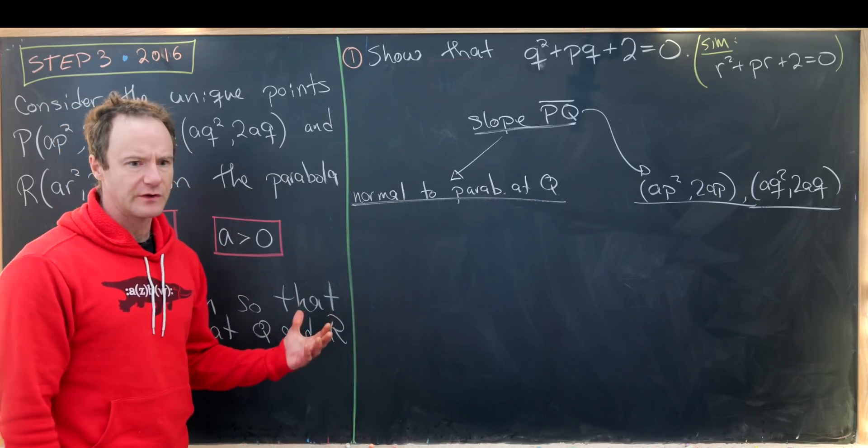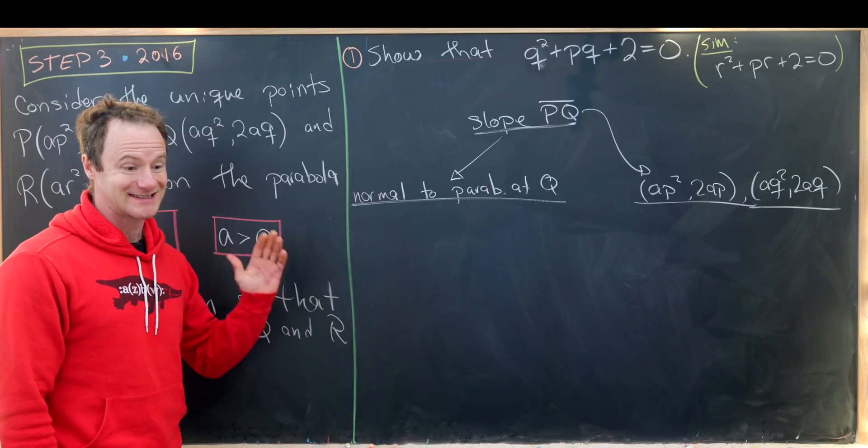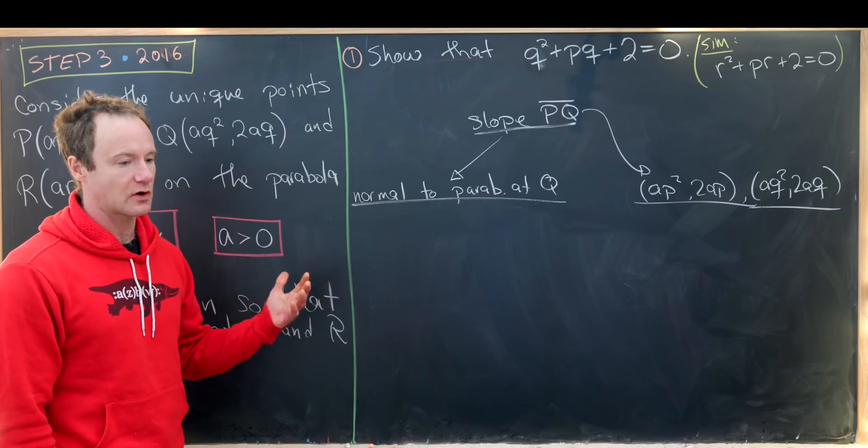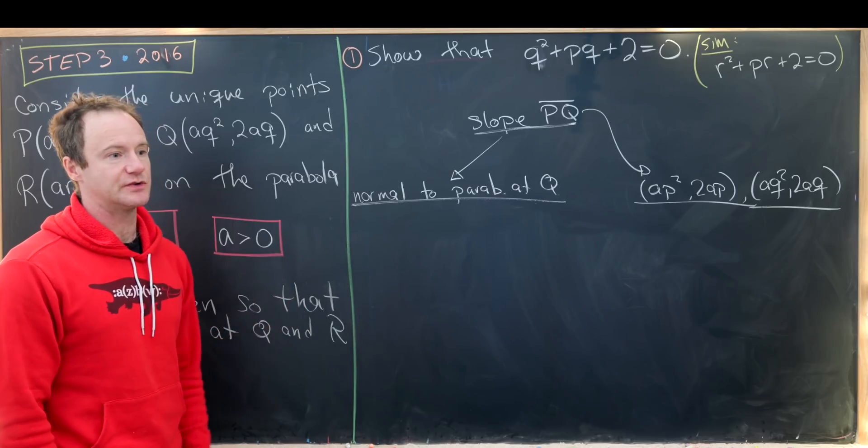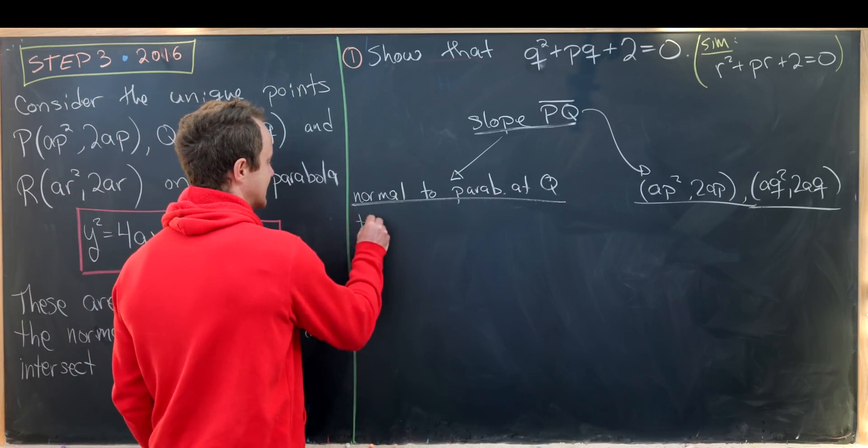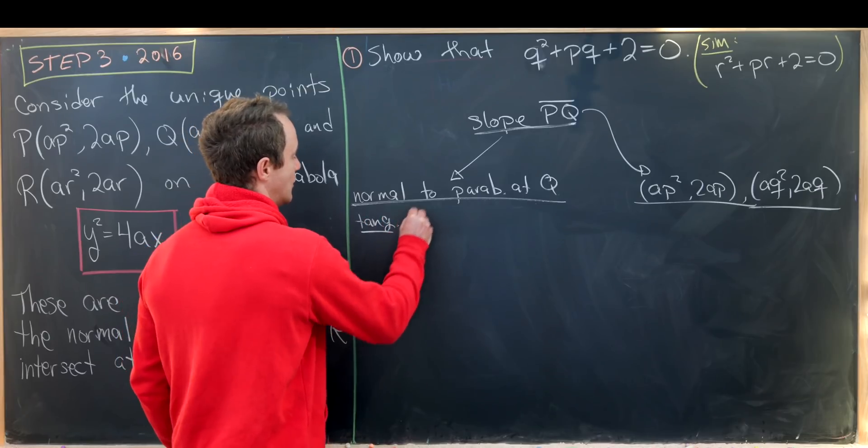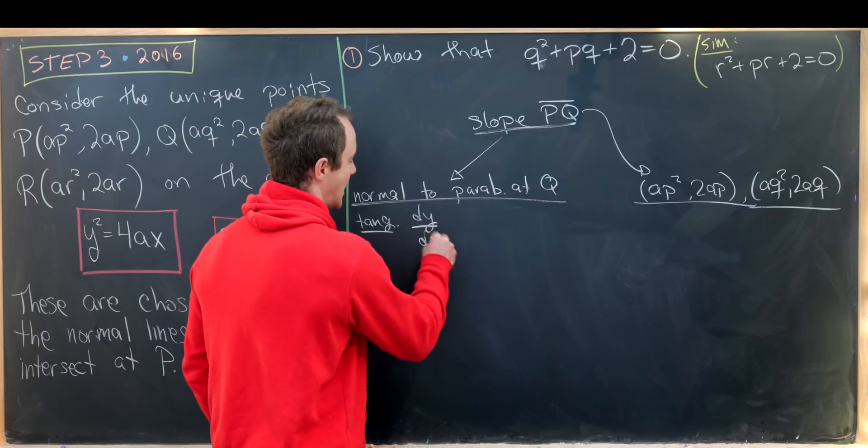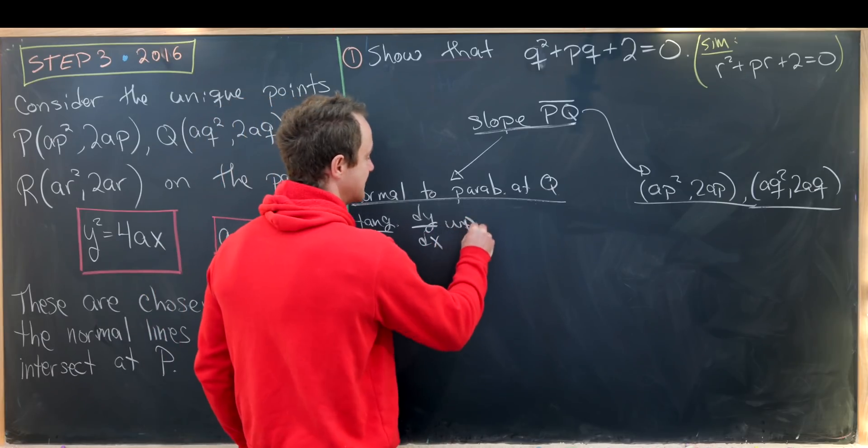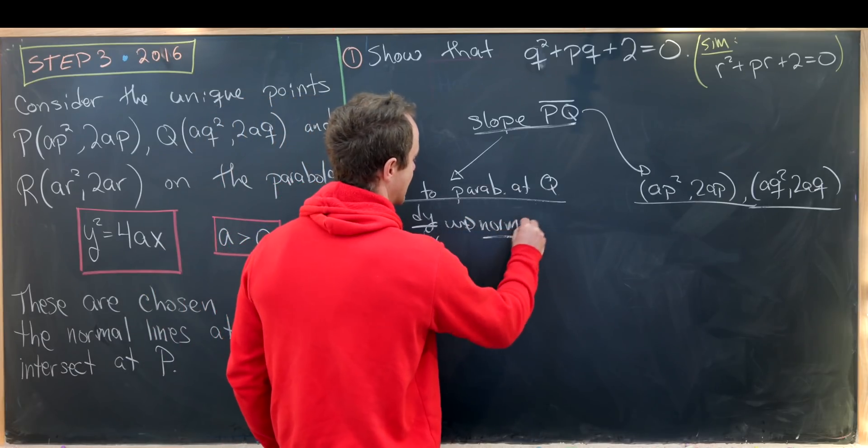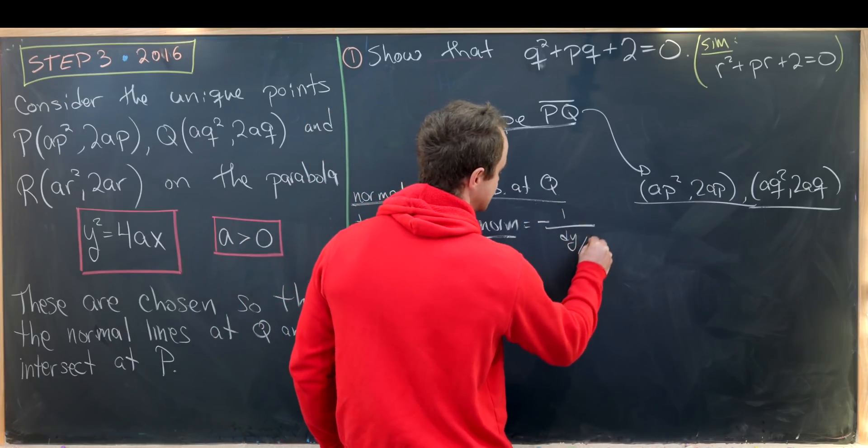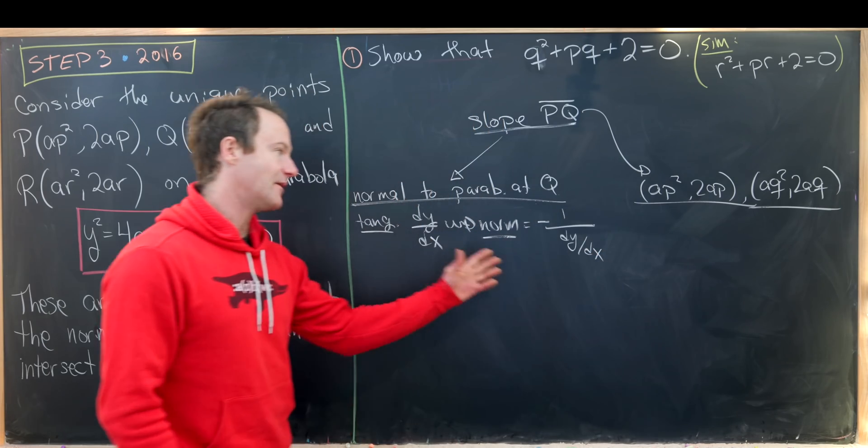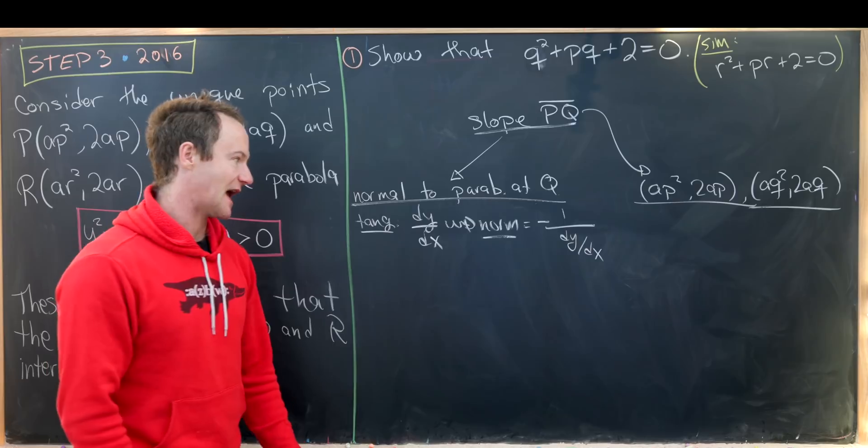So let's work on this normal to the parabola at Q first. In order to do that we need to find something that's tangent to the parabola and then recall that a normal line is perpendicular to a tangent line. So the slope is the negative reciprocal.